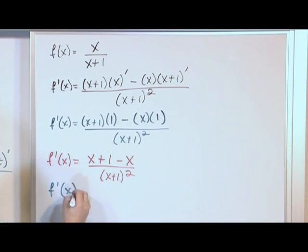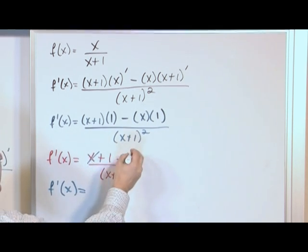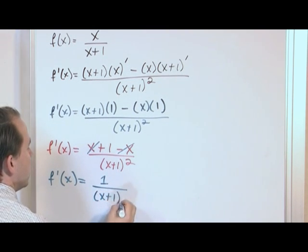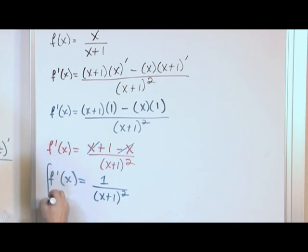f'(x) is equal to - we'll have the x cancel out with the negative x - so we'll just have 1 over x plus 1 squared. So the derivative is 1 over x plus 1 squared.